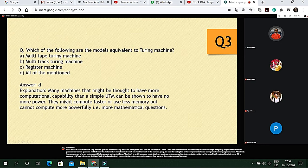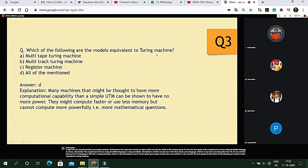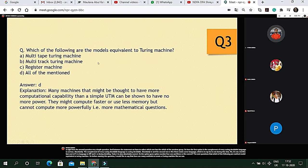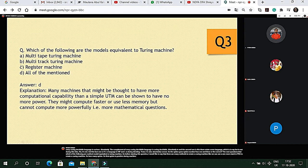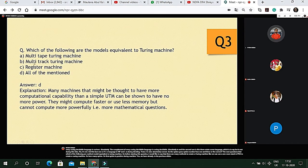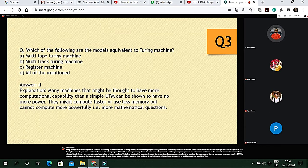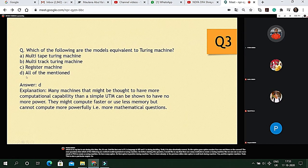The next question is which of the following are model equivalent to Turing machine? Before starting this question I would like to say that there are many methods to create a Turing machine like we can use one more stack in PDA to create a Turing machine. Here are many options. The first option is multi-tape Turing machine. Yes we have already had a view over it in the previous slides. Second option is multi-tip Turing machine. Yes and the register machine. Yeah this is also a part of Turing machine. So the correct option will be all of the mentioned.